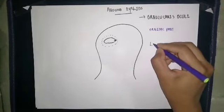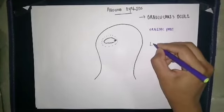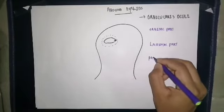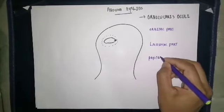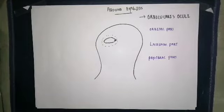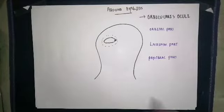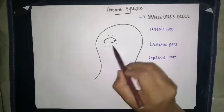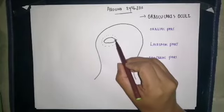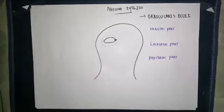The three parts of the orbicularis oculi are: the orbital part, the lacrimal part, and the palpebral part. Each of these parts has a different origin and insertion, which we will discuss one by one.